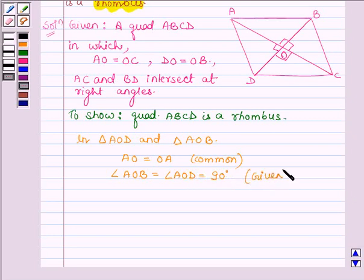This is given to us that the diagonals bisect at right angles and also DO is equal to OB. This is also given to us. So in these two triangles we get that this side is common, these two angles are each of 90 degrees.